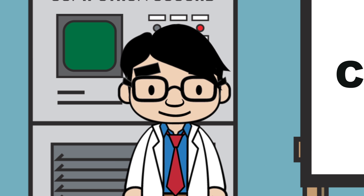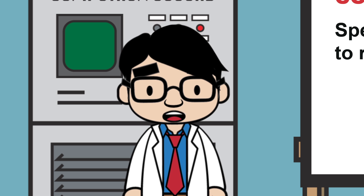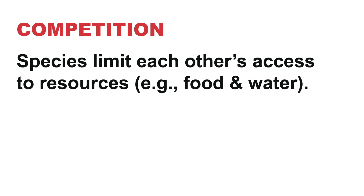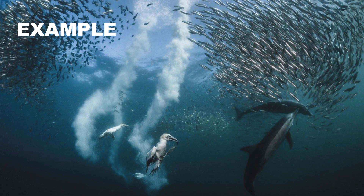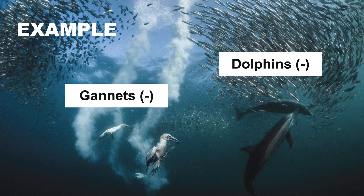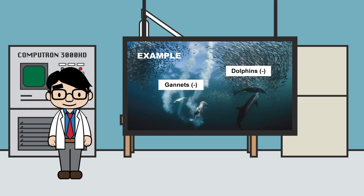Now let's move on to competition. In competition, species limit each other's access to resources, such as food, water, shelter, and so on. Since neither species can get as much as they could, it's a lose-lose situation for species A and B. An example of competition can be seen with the gannets and the dolphins. If the gannets get more sardines, then there will be fewer for the dolphins. But if the dolphins get more sardines, then there will be fewer for the gannets. The result of competition is that each species gets less.